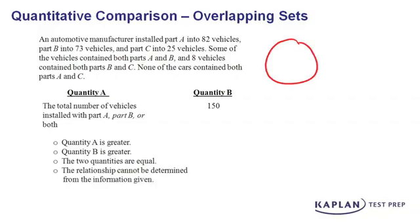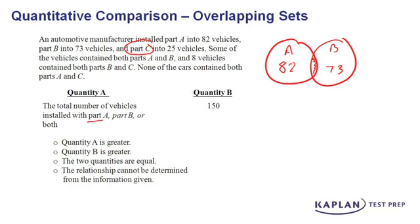We've got part A, and that's going to represent 82. We've got part B, and that's going to represent 73. We know there's an overlap section. Now they start talking about part C, but look at Quantity A — Quantity A is interested in the vehicles with either part A, part B, or both parts A and B installed in the car.